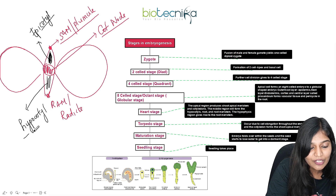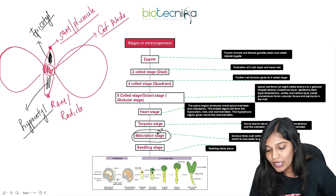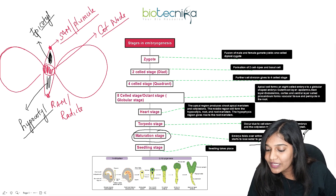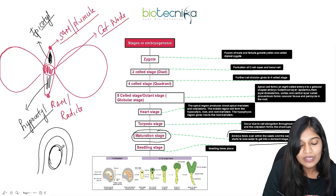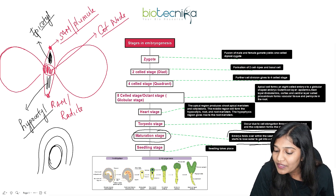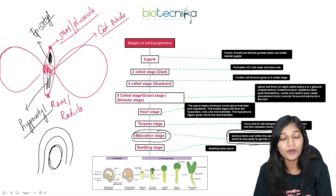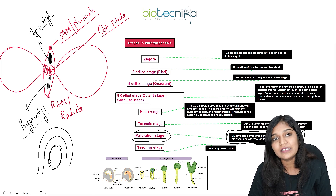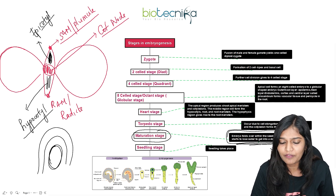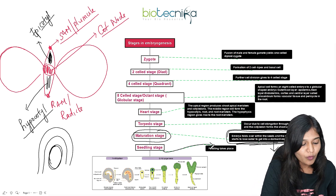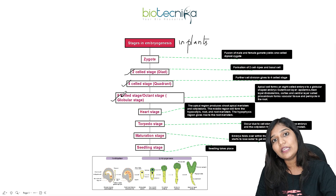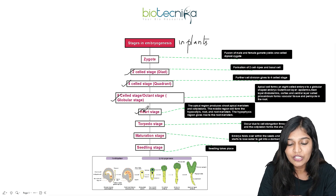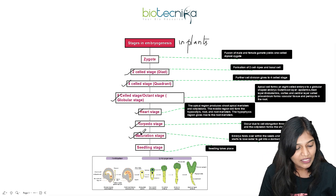Now the embryo goes into a maturation stage within the ovule. The embryo has all cotyledons and structures formed. The seed loses water and becomes dormant or inactive for some time, and when conditions are favorable, the seedling stage happens. The stages of embryogenesis in angiospermic plants are: zygote, two-cell, four-cell, eight-cell, through to late globular, heart-shaped, torpedo, maturation, and finally seedling stage.